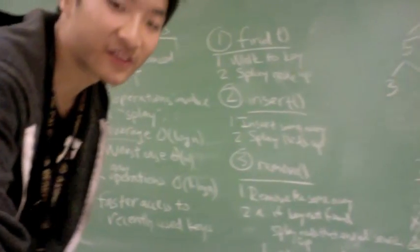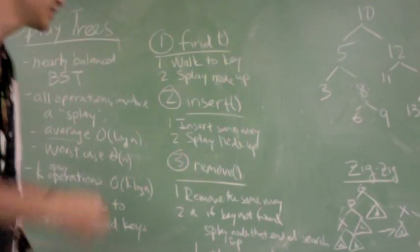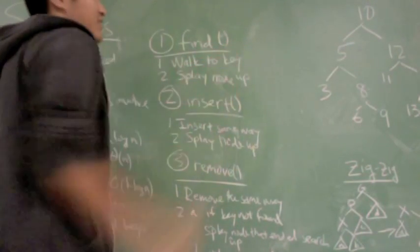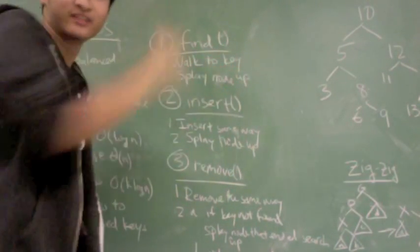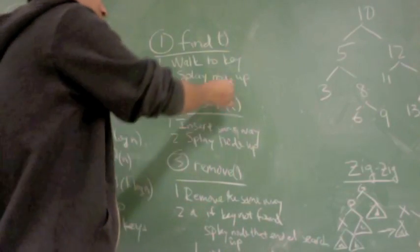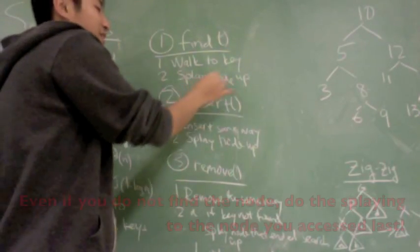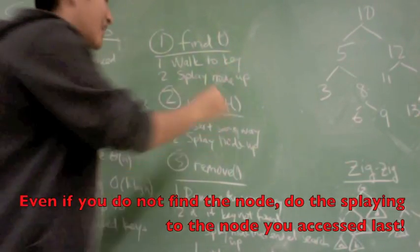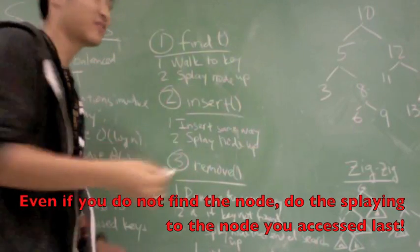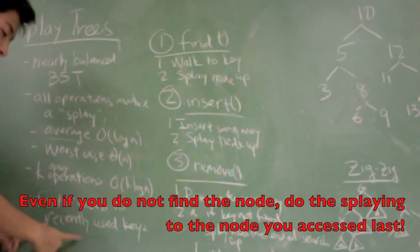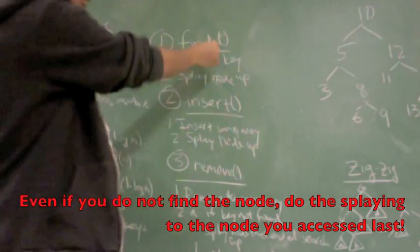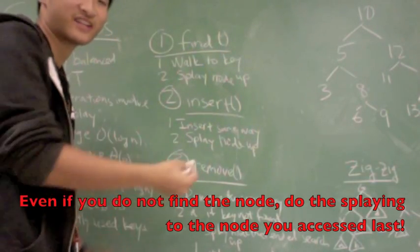Here are some algorithms for splay trees. First one is find. You walk to the key, just like how you would for normal binary search trees, but at the very end, you're not done yet, you have to splay that node that you just found up. This allows us to access this key faster in case we ever want to find it again.